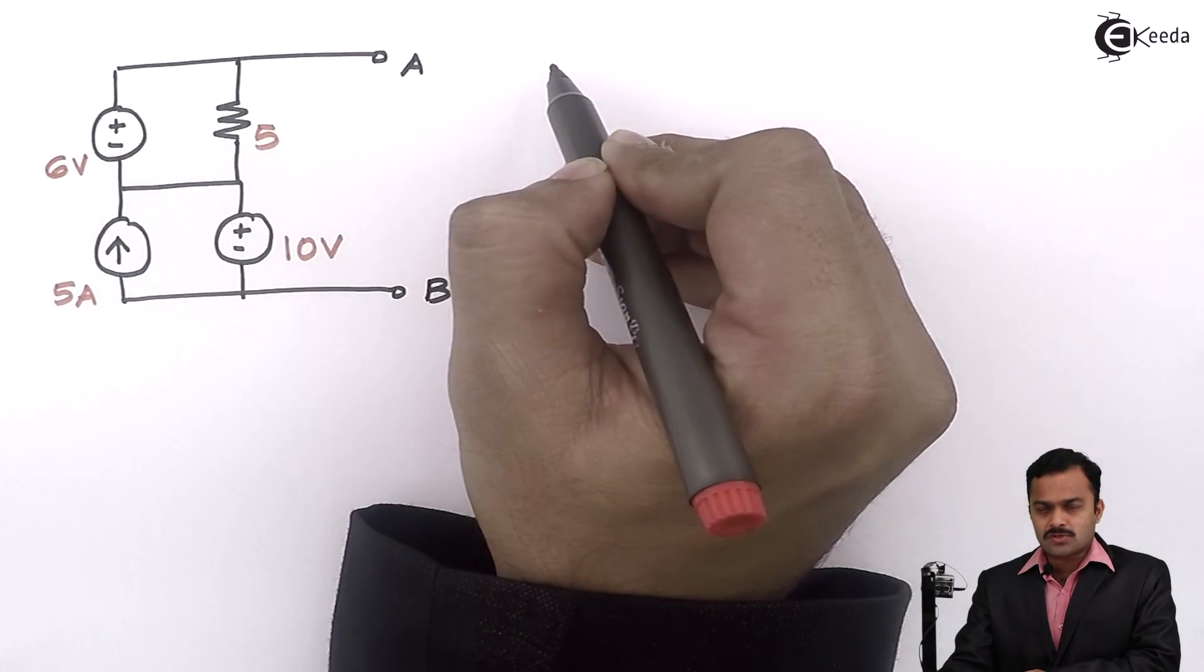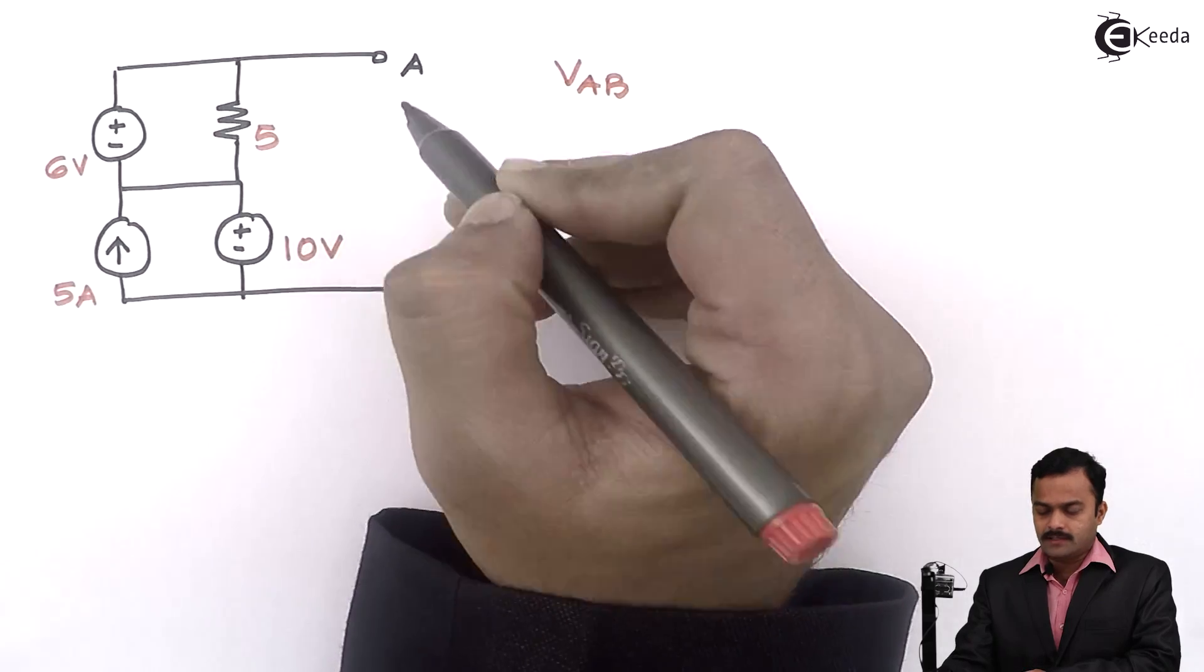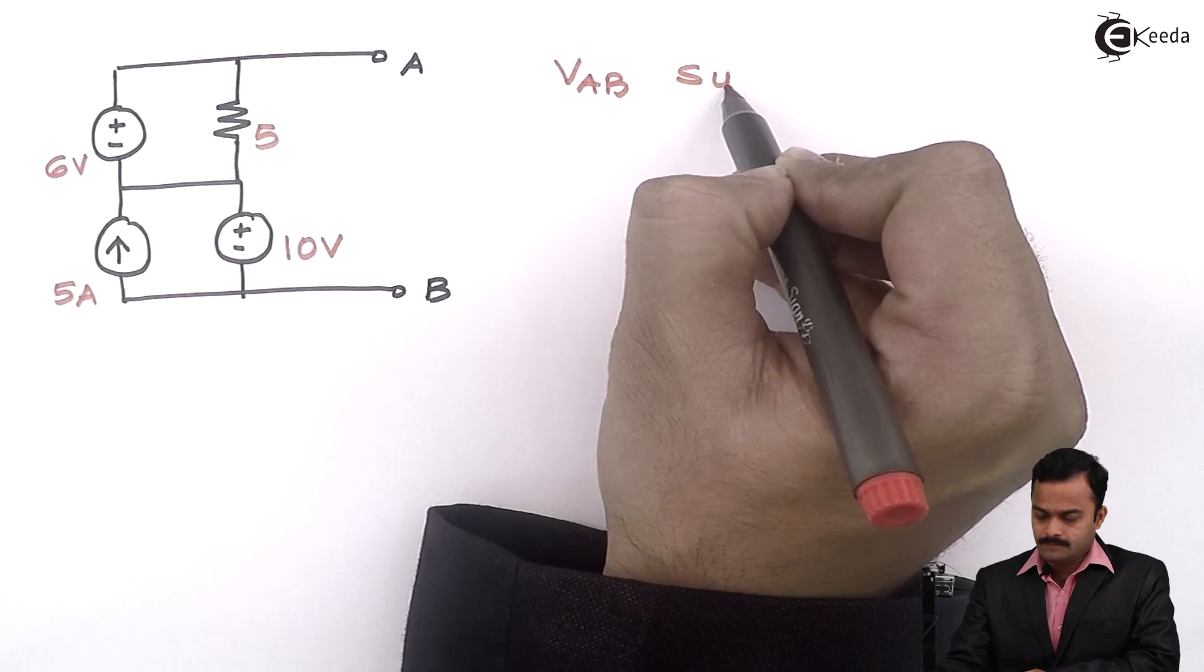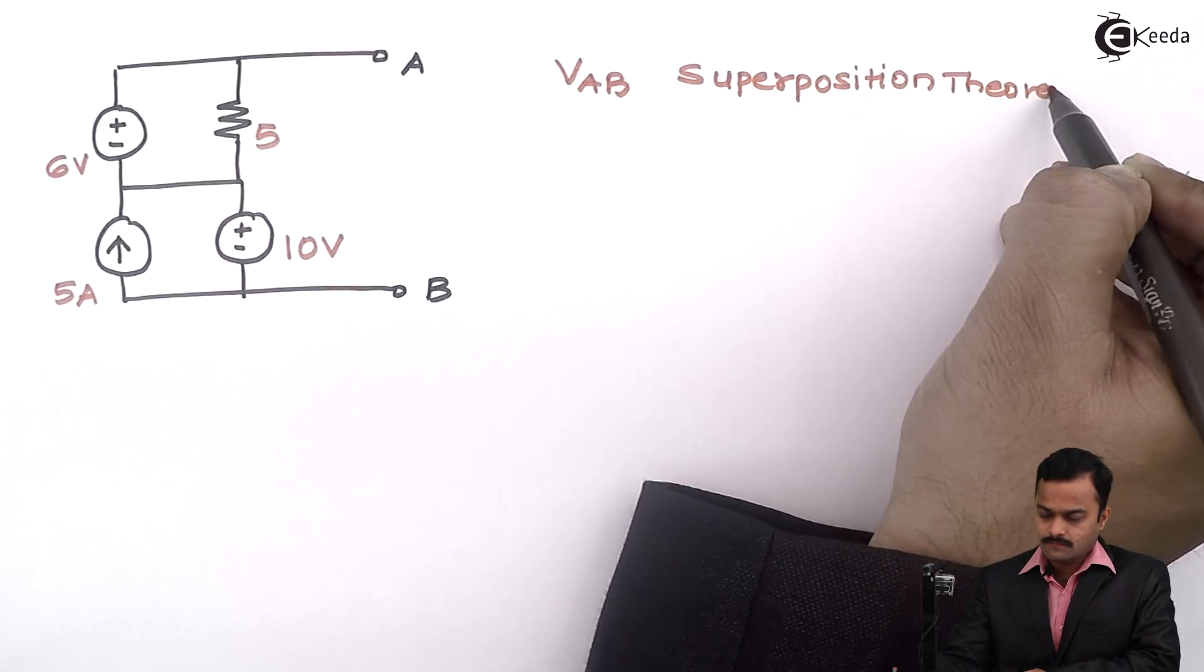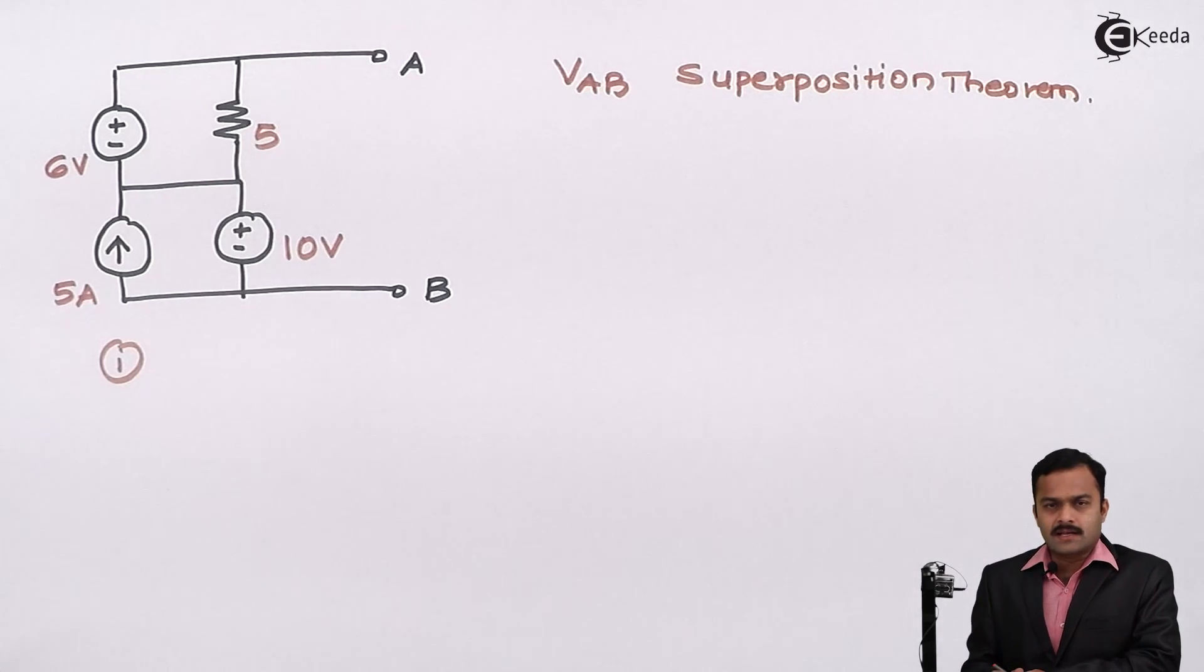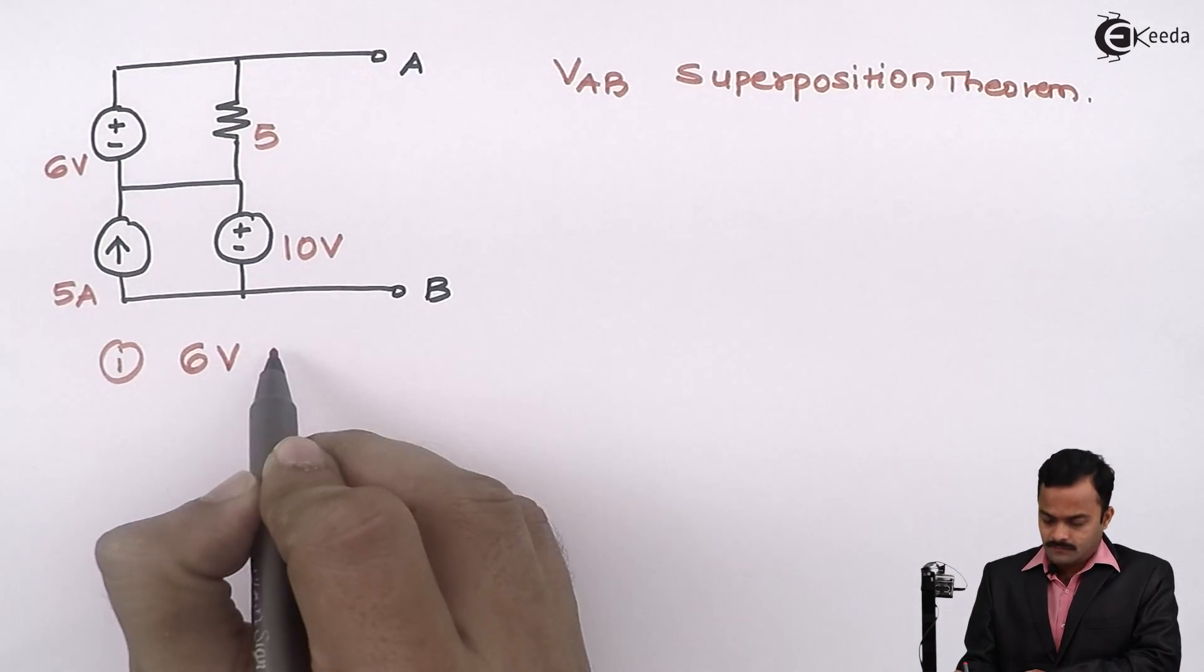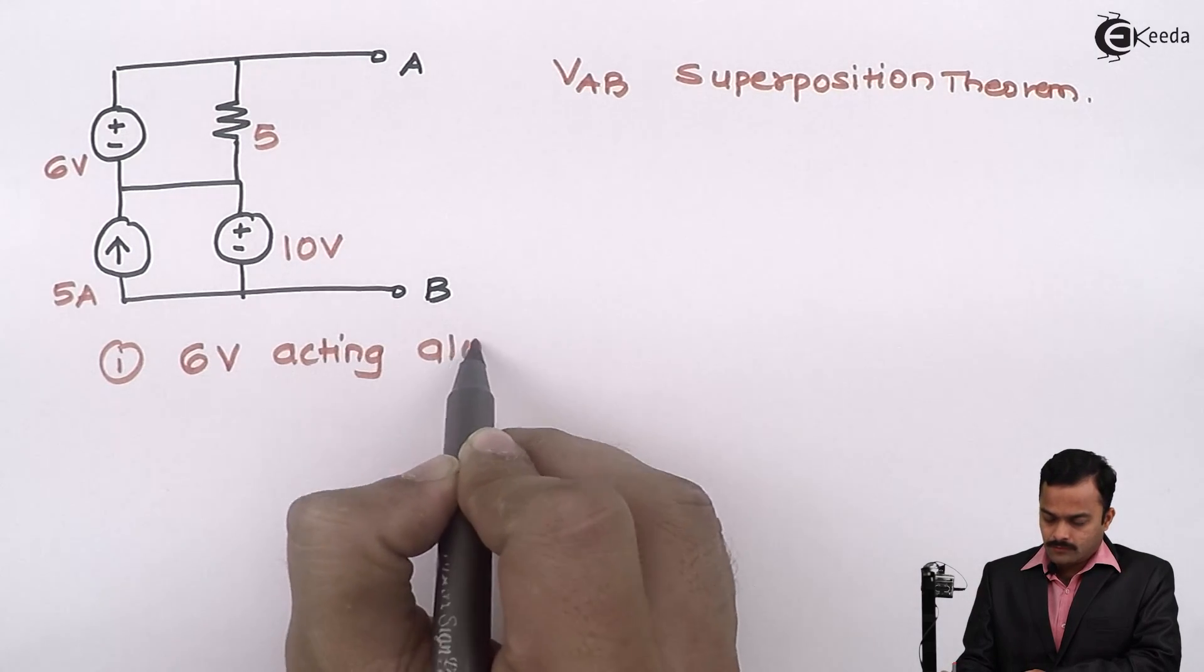We are supposed to find out voltage between points A and B, that is VAB, using Superposition theorem. So let's start. First, I will consider only one source acting alone, so I will consider 6V acting alone.